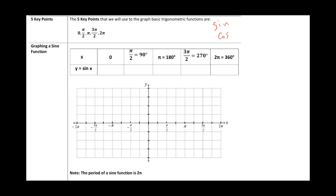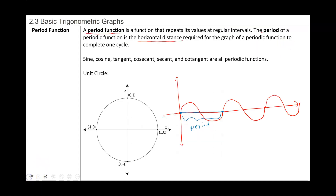I'm going to draw the unit circle once again. Quick recap: zero radians corresponds to the point (1, 0). Here is 90 degrees, or pi over two radians, and the corresponding point is (0, 1). This is 180 degrees or pi radians — the corresponding ordered pair is (-1, 0). This is 270 degrees or three pi over two, corresponding point (0, -1). And it goes back to two pi. Zero and two pi are coterminal, the same as 360 degrees, which is two pi radians.